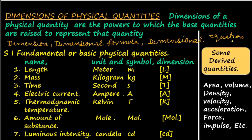A worksheet is provided at the end of the video for you to practice. The seven fundamental or basic physical quantities are called dimensions of physical world. The fundamental quantities, their units, symbols, and representation of the dimensions are shown below in the table.